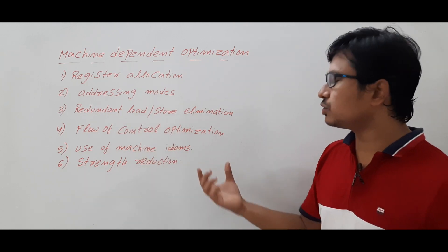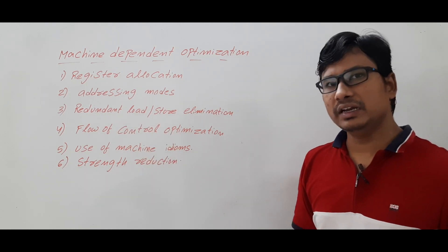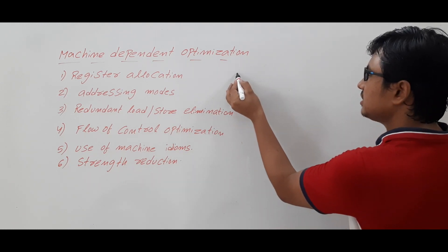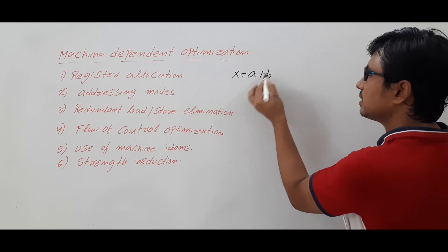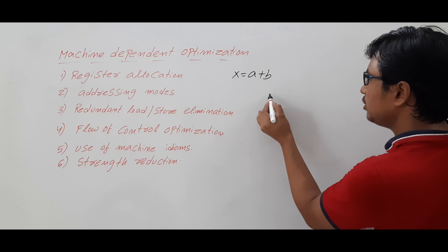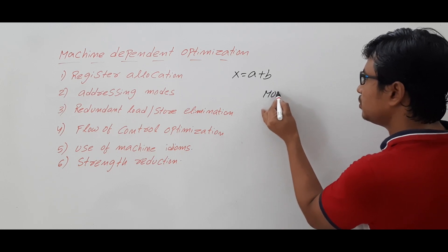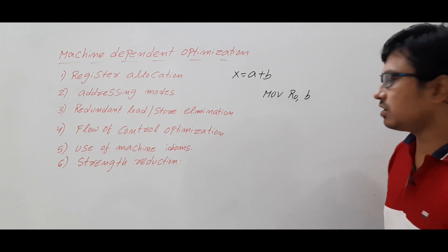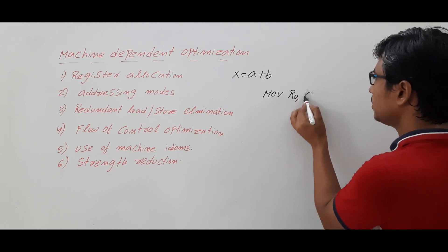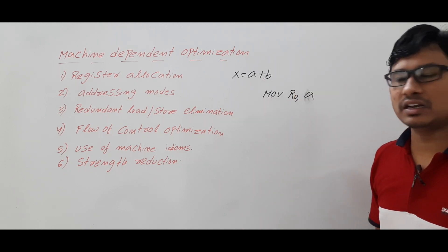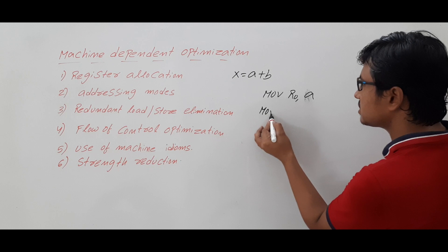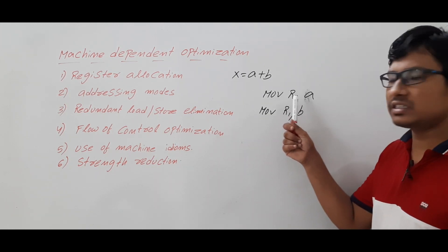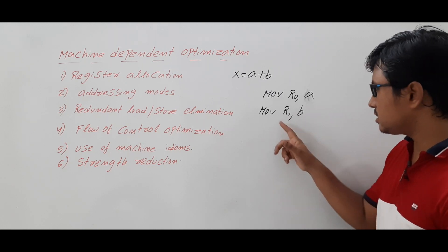Coming to the next technique: redundant load or store elimination. Suppose you have an instruction x = a + b. To perform this, you will first move the value of a into register r0 — r0 is the destination and a is the source. Similarly, you will move the value of b into register r1 — r1 is the destination and b is the source.